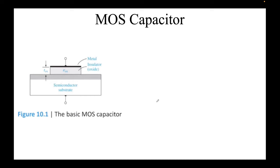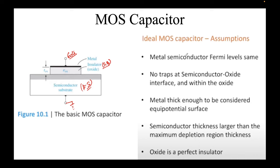First, a quick recap of the MOS capacitor — the precursor to the MOSFET. As the name suggests, we have a metal (the gate), then an insulator (typically silicon dioxide for silicon-based devices), and a p-type semiconductor substrate. We ground the substrate terminal. There are two terminals: the gate and the grounded body reference.